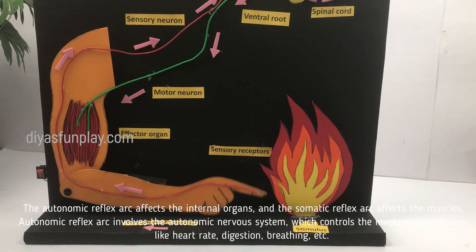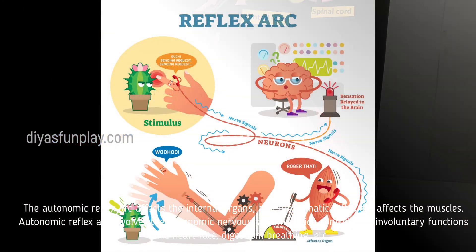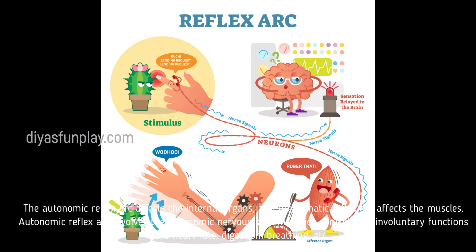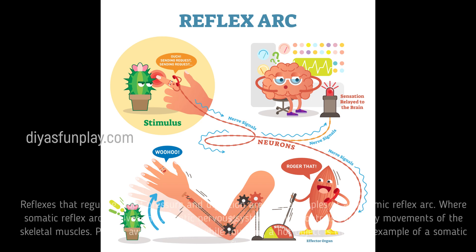The autonomic reflex arc involves the autonomic nervous system which controls the involuntary functions like heart rate, digestion, breathing, etc. Reflexes that regulate blood pressure and digestion are the best examples of the autonomic reflex arc.